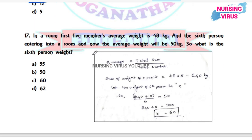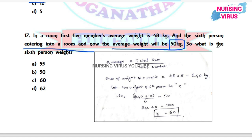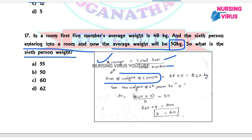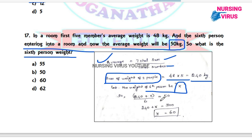Question 17 (Aptitude): In a room, the average weight of the first five persons is 48 kg. When the sixth person enters, the average becomes 50 kg. What is the sixth person's weight? Using the formula: sum = average × number, the sum of the first five is 48 × 5 = 240 kg. Then (240 + x) ÷ 6 = 50, so x = 300 − 240 = 60 kg. The sixth person's weight is 60 kg.